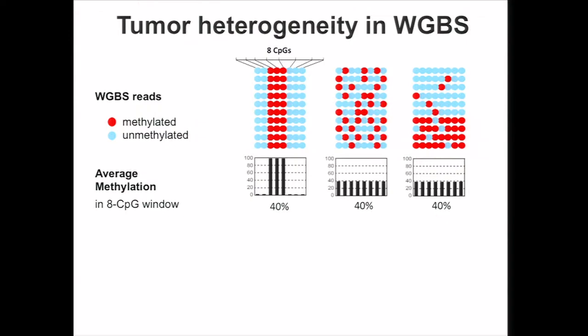However, the nature of the data are very different. Aryee group proposed a concept of epipolymorphism, which measures the diversity between the within-read patterns in the set of bisulfite sequencing reads. The first locus has no epipolymorphism because the reads are the same. The second one is highly polymorphic because the reads are very different from each other, whereas the third one is somewhere in between.